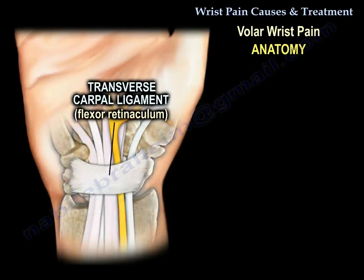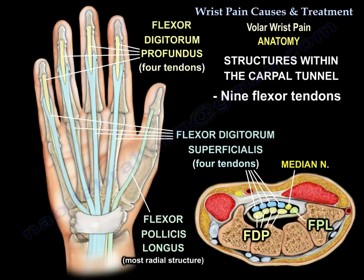You can see the transverse carpal ligament and the flexor retinaculum. Within the carpal tunnel are nine flexor tendons: four tendons for the flexor digitorum superficialis, four tendons for the flexor digitorum profundus, and the most radial structure, which is the flexor pollicis longus. The median nerve also lies within the carpal tunnel.